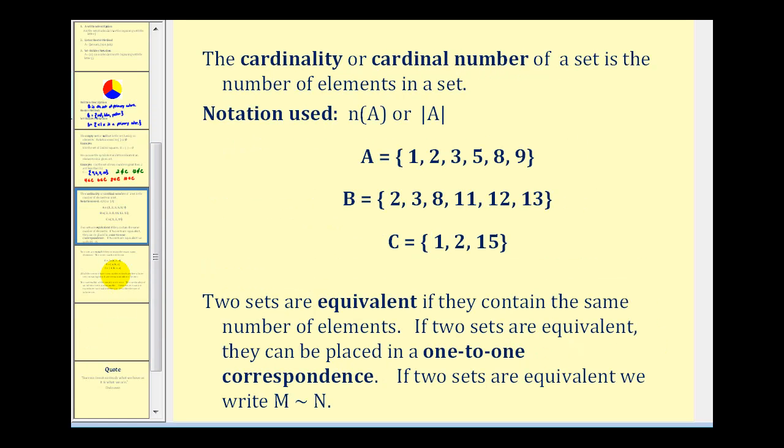Now let's talk about cardinality. The cardinality or cardinal number of a set is the number of elements in a set. And we normally use these two notations to represent the cardinality of a set. And since set notation does not repeat elements, we just have to count the number of elements in each set to identify the cardinality of the set.